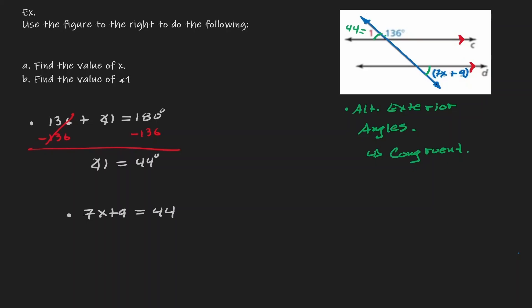At this point, we perform simple algebra. Subtracting 9 from both sides: 7x equals 35. Dividing by 7, we get x equals 5. So x has a value of 5, and along the way we also identified that angle 1 has a value of 44 degrees. In summary, the main idea is to identify what type of angles you have, then attach the corresponding property — either congruency or supplementary — depending on what type of angles they are.